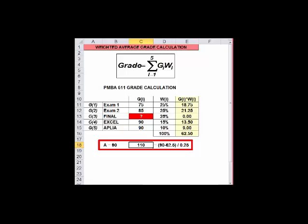Well, that's not going to happen, so how about a B? For a B, you need 80. So 80 minus 62.5 divided by 25% tells you a 70. You need a 70 to make a B.